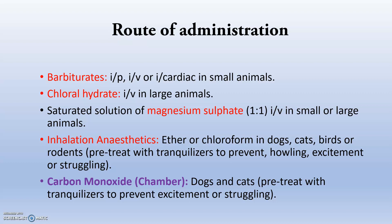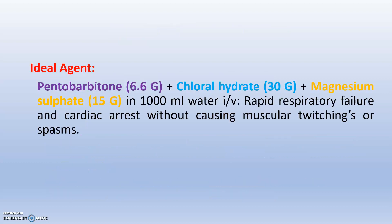Before administration, we have to pre-treat the animals with tranquilizers, sedatives, or hypnotics. Carbon monoxide is used via chamber mainly in dogs and cats. The ideal agents in large and small animals are mainly pentobarbitone, chloral hydrate, and magnesium sulfate. This combination is mixed in 1000 ml of water and given direct IV or intracardiac. Rapid respiratory failure and cardiac arrest are the main causes of death, with no muscular twitches, spasms, or convulsions — which is the main advantage.